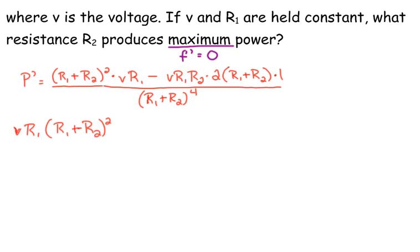Put the V R1 in front of the R1 plus R2 squared. Put the 2 in front of the V R1 R2 R1 plus R2. Set the numerator equal to 0, and also the denominator.